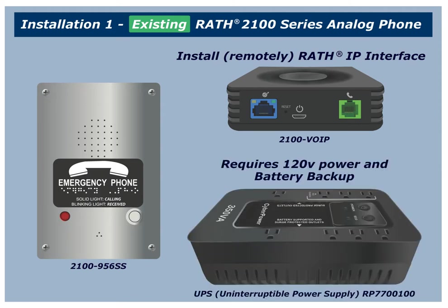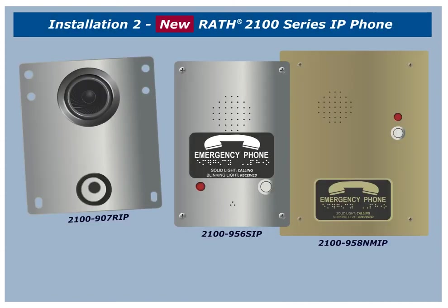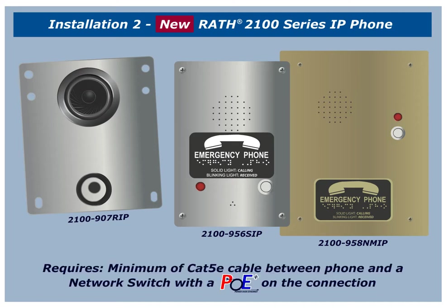The IP interface requires backed-up power to meet code requirements. Installation number 2: New Rath 2100-Series IP Phone. The second type of installation is when a Rath 2100-Series IP phone is installed directly into the elevator. This type of setup requires a minimum CAT 5E cable between the phone and a network switch with PoE Plus on the connection.